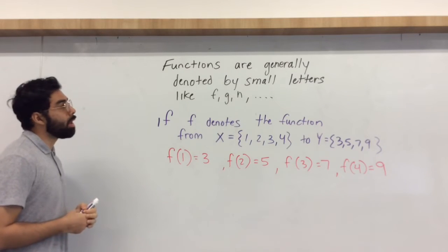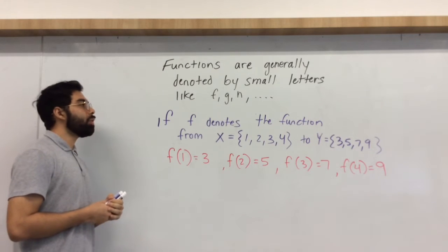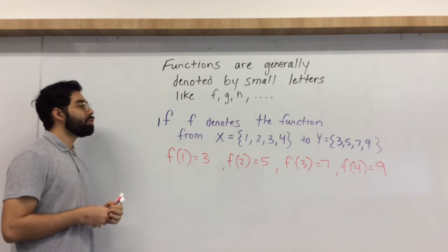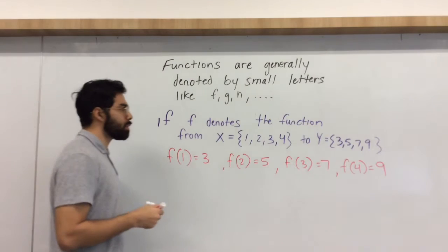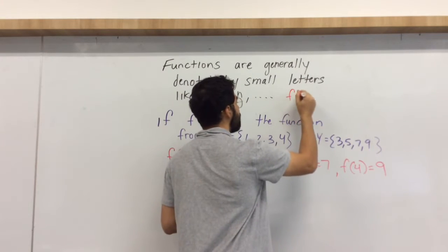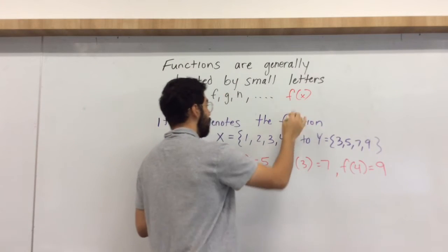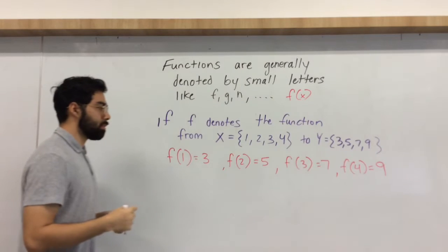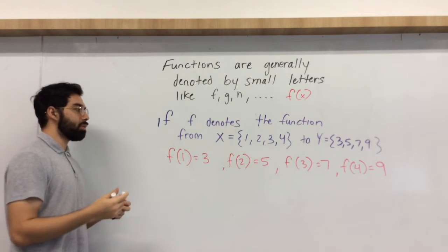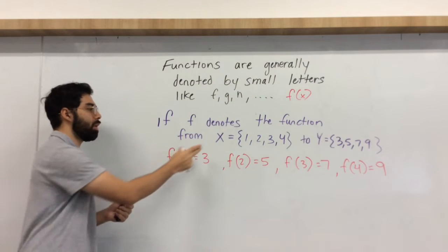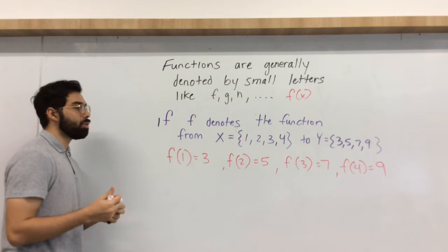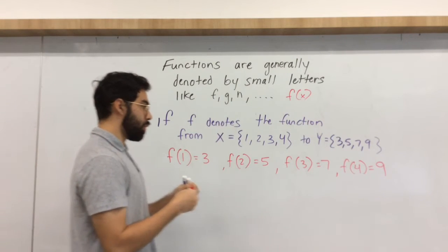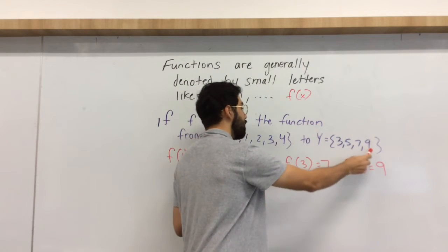All right, so functions are generally denoted by small letters like f, g, or x. And that's why you guys have seen f of x, x being our input. Question is, what is our output? So if f notes the function from x, which is 1, 2, 3, 4, your outputs should be 3, 5, 7, and 9.